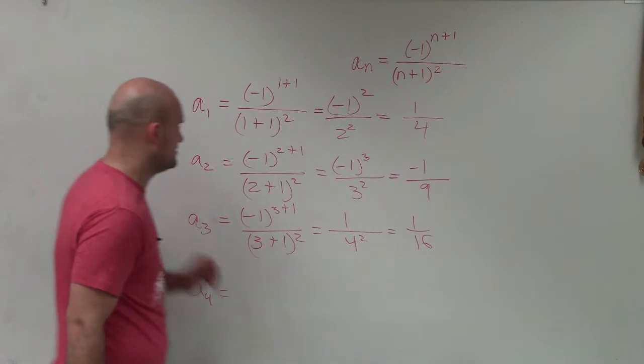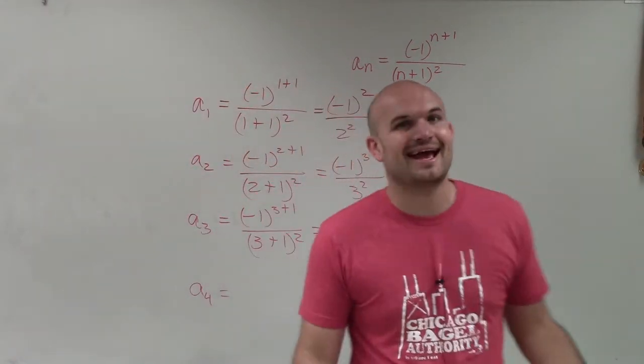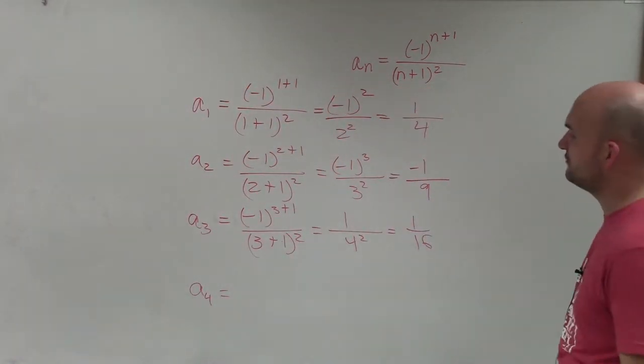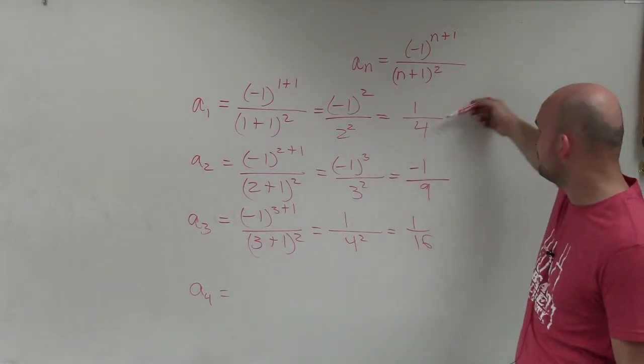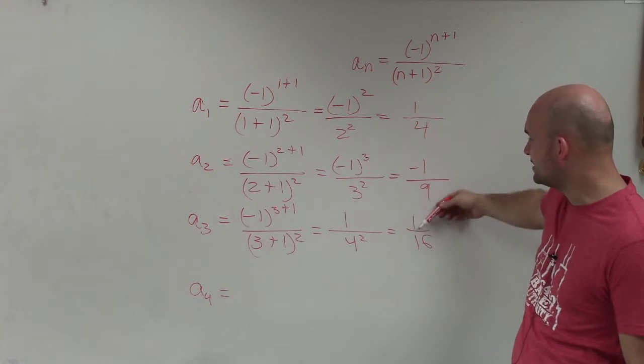A to the 4. Let's go and see if we can start doing these kind of in our head a little bit instead of writing all those out. So a to the 4. So kind of following this formula, I go positive, negative, positive. So therefore,